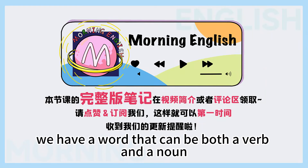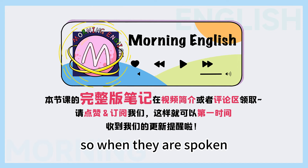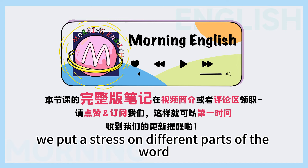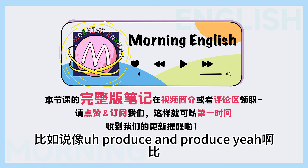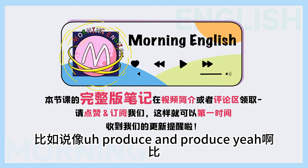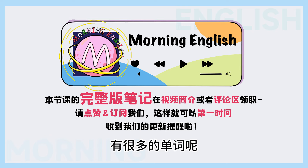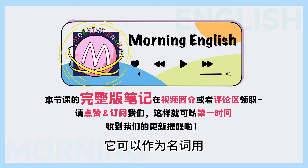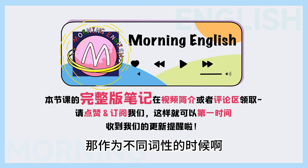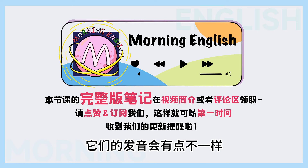Often in English, we have a word that can be both a verb and a noun. When they are spoken, we put a stress on different parts of the word. 比如说像produce和produce,或者present和present等等。有很多的单词呢,它可以作为名词用,也可以作为动词用。作为不同词性的时候,它们的发音会有点不一样。